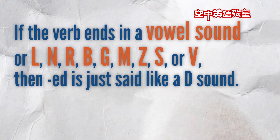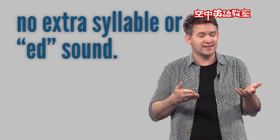Here's the next part of the rule. If the verb ends in a vowel sound, or l, n, r, b, g, m, z, s, or v, then -ed is just said like a d sound. It doesn't become an extra syllable. So let's look at the verbs spell, rub, and scream. They all end in a consonant that was on that list. When we add -ed to them they become spelled, rubbed, and screamed. No extra syllable or -ed sound.